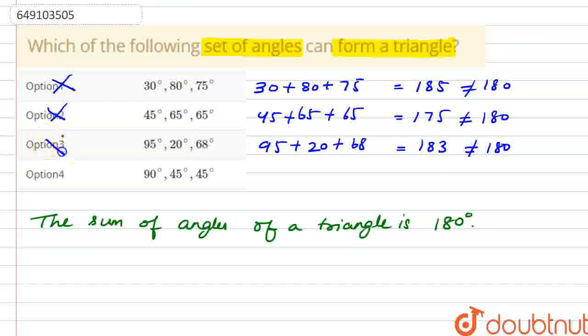This is also not correct. And our fourth option is 90 plus 45 plus 45. Here 45 plus 45 is 90, and 90 plus 90 is 180. So here it equals 180. That means with option four, we can form a triangle. So option four is our correct answer.